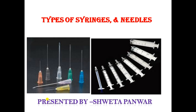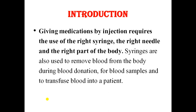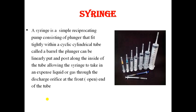Today's topic is types of syringes and needles, which are very important for giving any medications. Giving medication by injection requires the use of the right syringe, right needle, and the right part of the body. Syringes are also used to remove blood during blood donation, for blood samples, and to transfuse blood into a patient. Without a syringe we cannot give IV or IM medication.